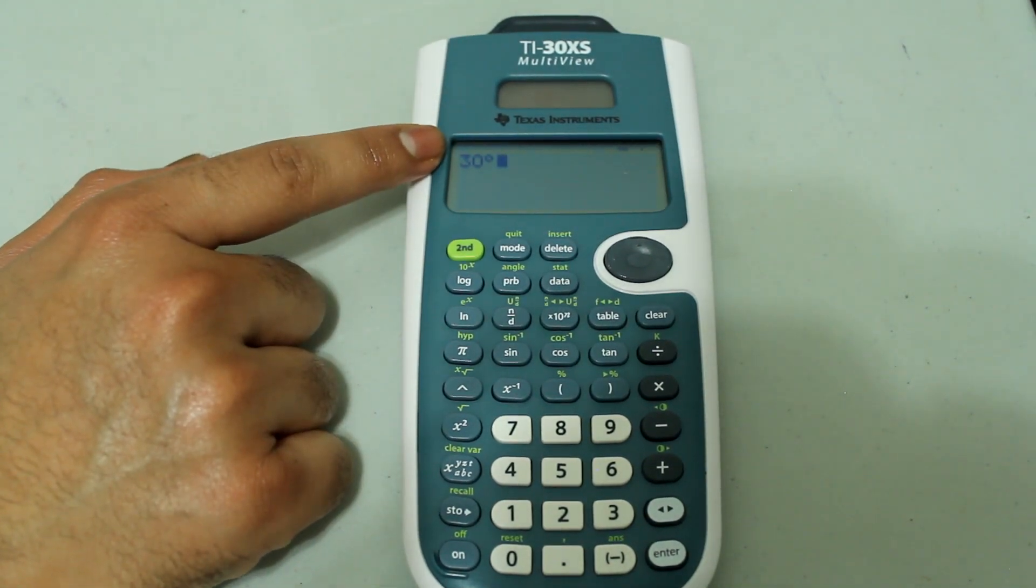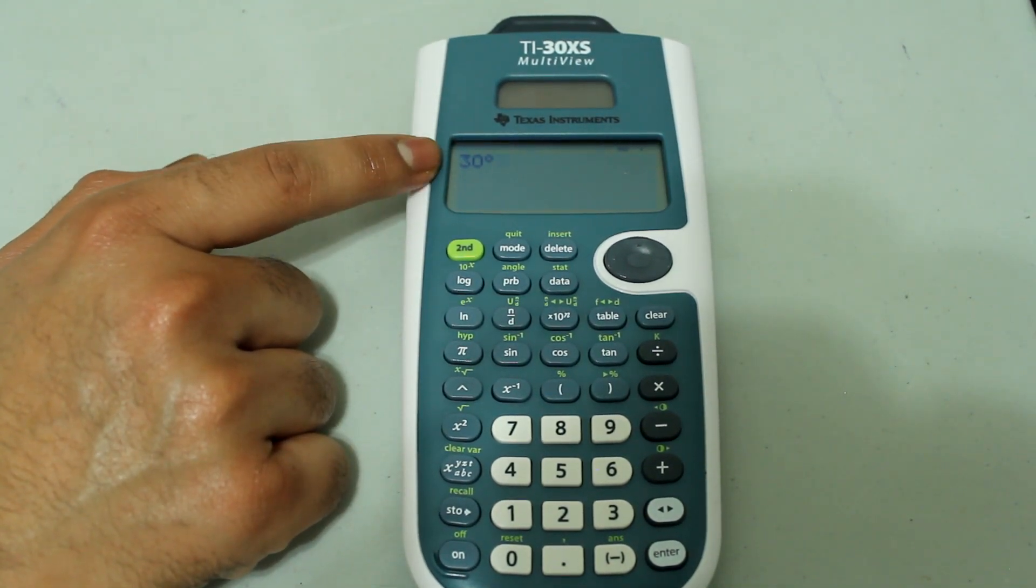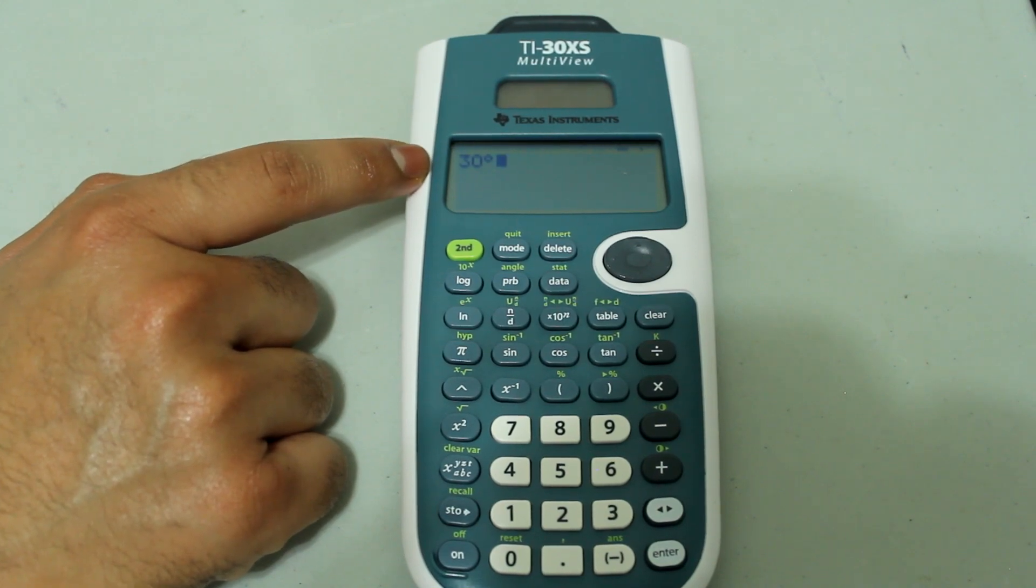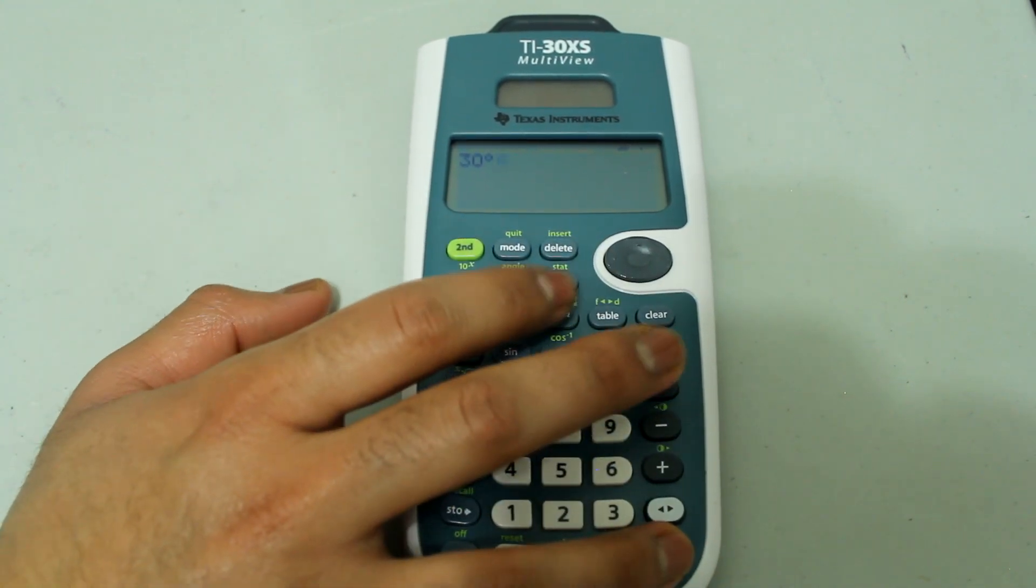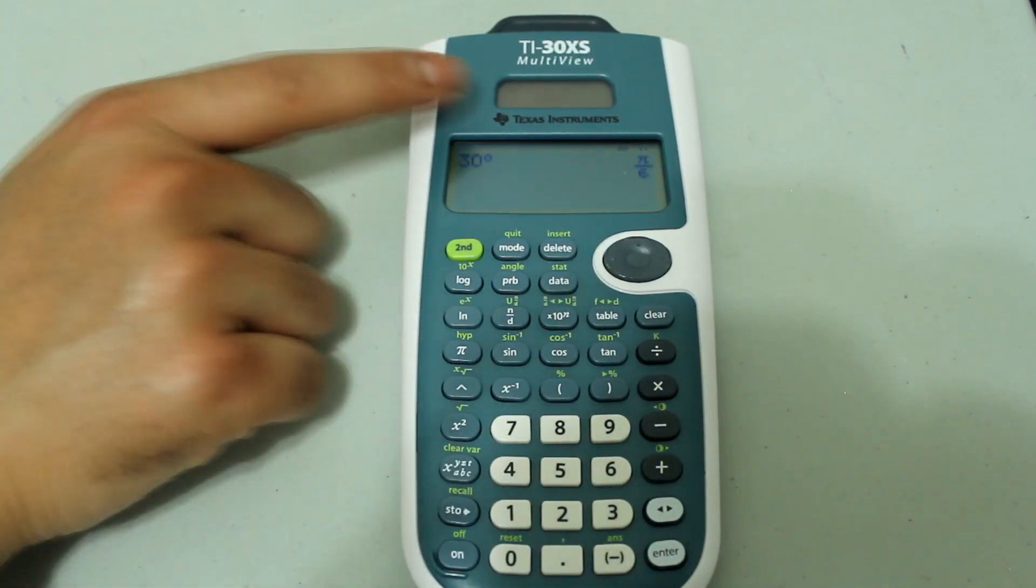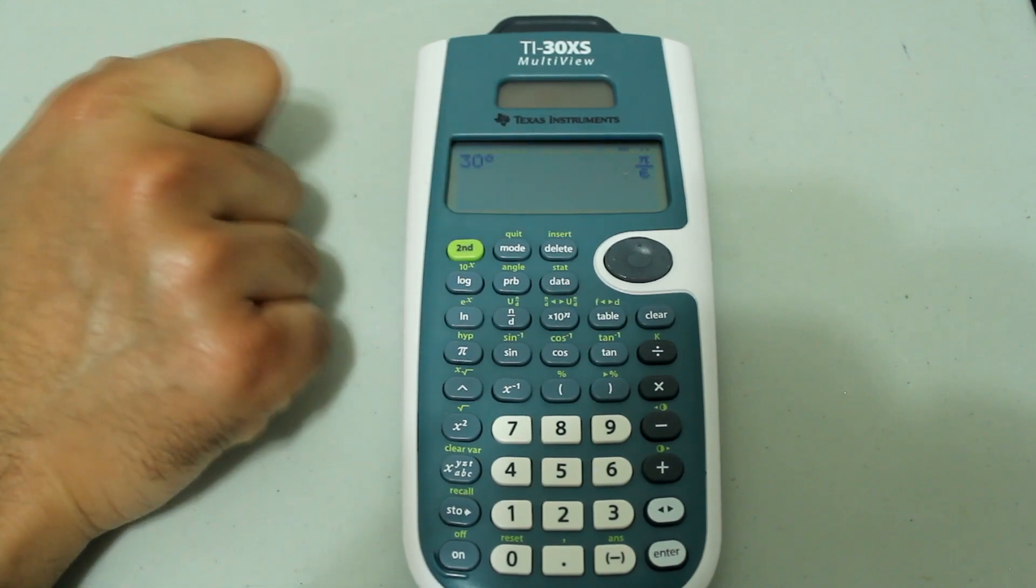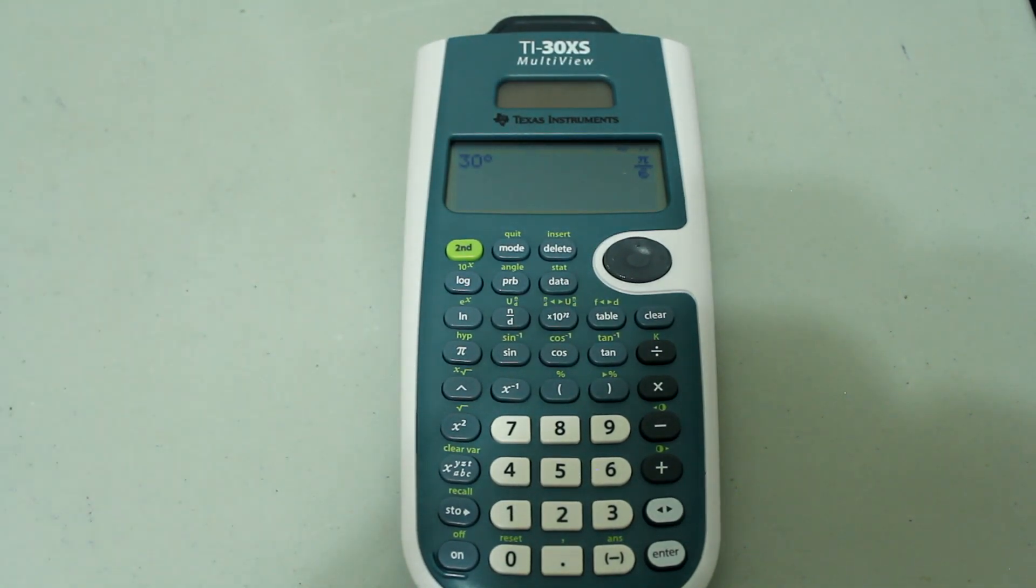So now the entry looks like this. We are telling the calculator that the entry is in degrees. And since we are in radian mode, the answer will be in radians. So press enter. And we get the answer as pi over 6 radians.